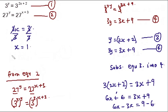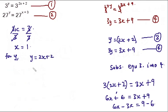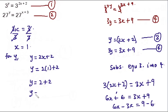For the value of y I'll use equation three, since it's already in terms of y. y = 2x + 2, and x = 1, so y = 2(1) + 2 = 2 + 2 = 4. So the value of x is 1 and the value of y is 4.